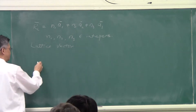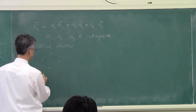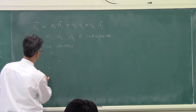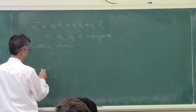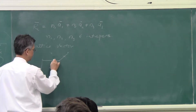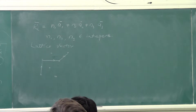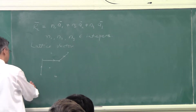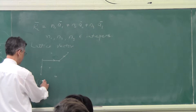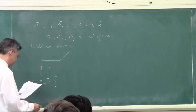Any two points in the lattice — it's easier to draw this in two dimensions — you can always get there by adding a number of lattice vectors. You can get from point A to point B in the crystal lattice, and that happens in 3D too. In general, this is represented by the lattice vector. In three dimensions, we have a periodic potential. The periodic potential has the property that if you translate it by this lattice vector, it becomes itself.